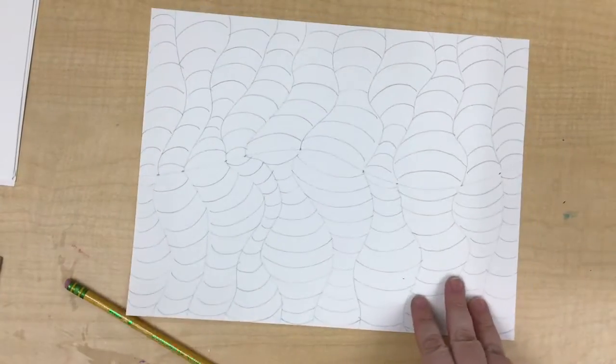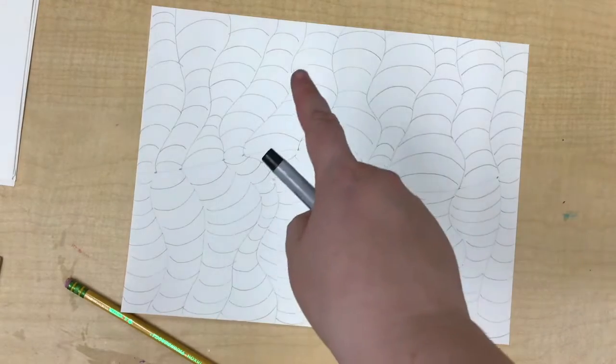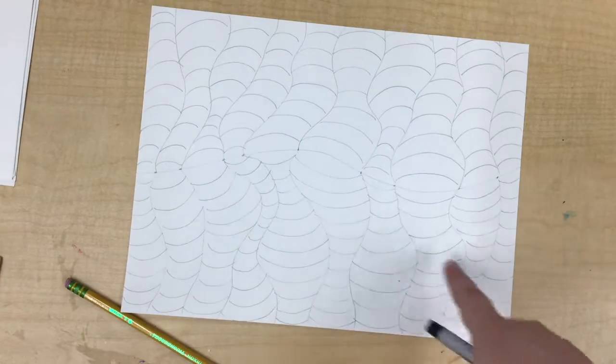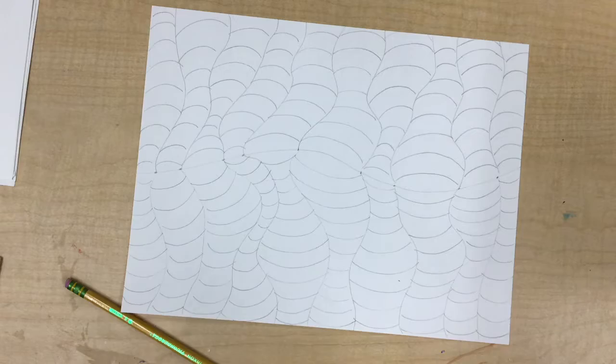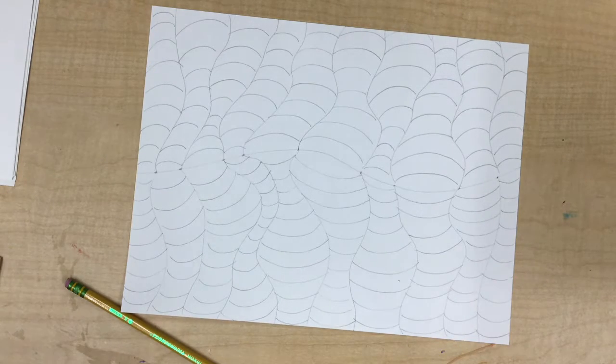The next step is to use a skinny sharpie and you're going to outline all of these lines. Again, this should take time. Do not go fast. Okay, slow down.